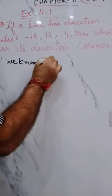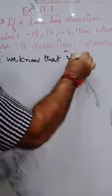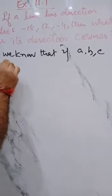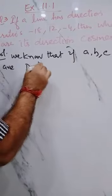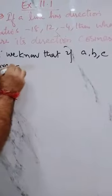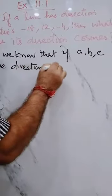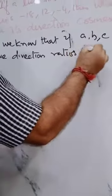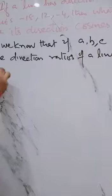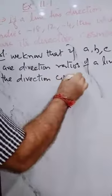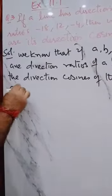We know that if A, B, C are direction ratios of a line, then direction cosines of the line are given by the formula.